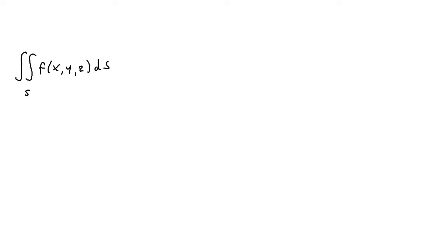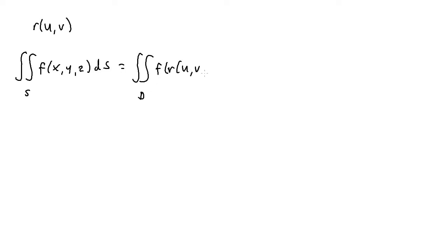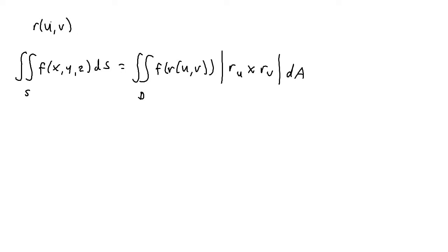I won't use this in the practice problems, but there's also another formula. If instead of z equals some function, you're given a vector function r in terms of u and v, the formula is the double integral over region D of f(r(u,v)) times the magnitude of the cross product of r sub u and r sub v, times dA. So if you're given a vector function in terms of u and v, you can put everything in terms of u and v and evaluate.